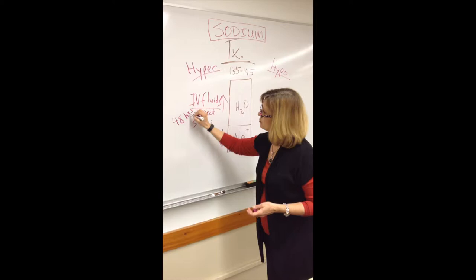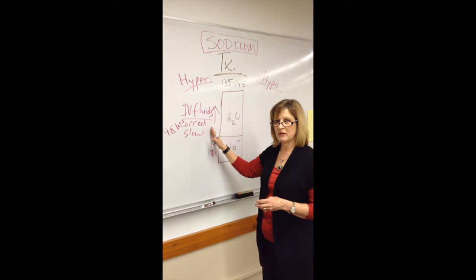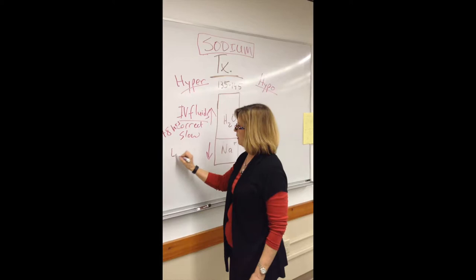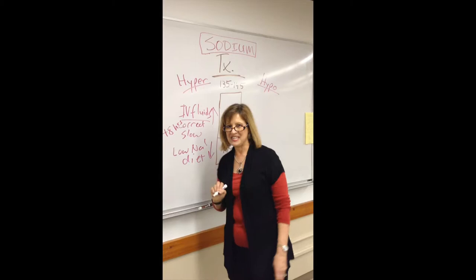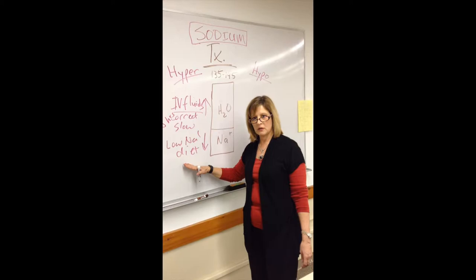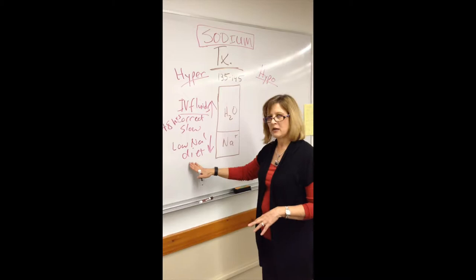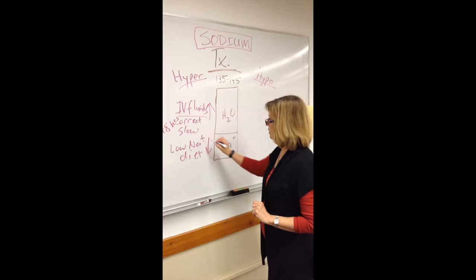Half normal saline or D5W can be used to slowly correct hypernatremia, making sure to go at a slower rate. To decrease sodium, we use a low sodium diet — restricting processed foods and processed meats, which have the most added sodium as preservatives. Better options are whole grains and whole fruits that are more natural, with lower sodium levels.